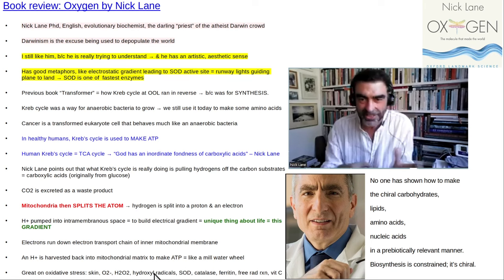Men in Western countries, after their early 20s when they're done growing, start becoming progressively iron overloaded, and women do so when they're post-menopausal. That's why you want to avoid high iron foods unless you're low in it, like a menstruating woman might be. There are good discussions of superoxide dismutase — the enzyme for neutralizing superoxide — which converts it into H2O2, and then catalase takes the H2O2 and makes it into water.